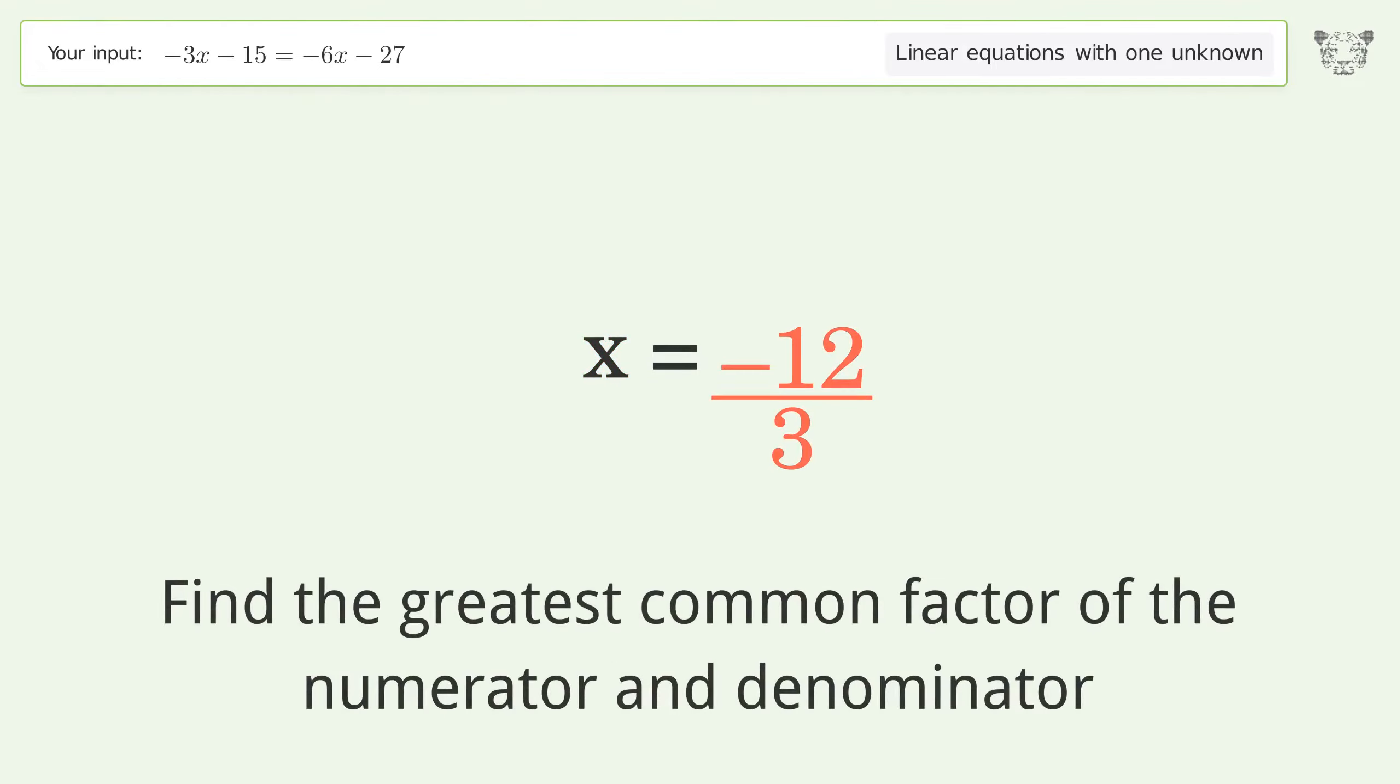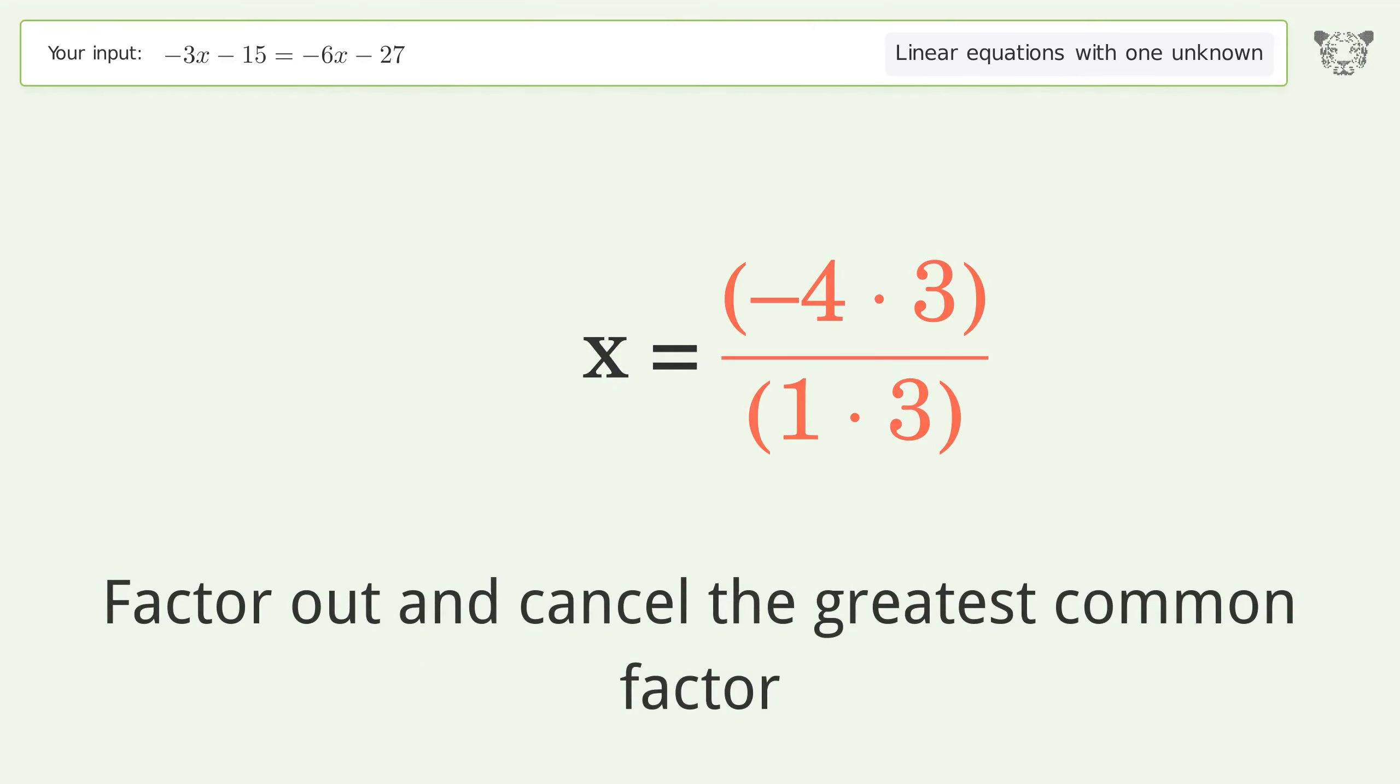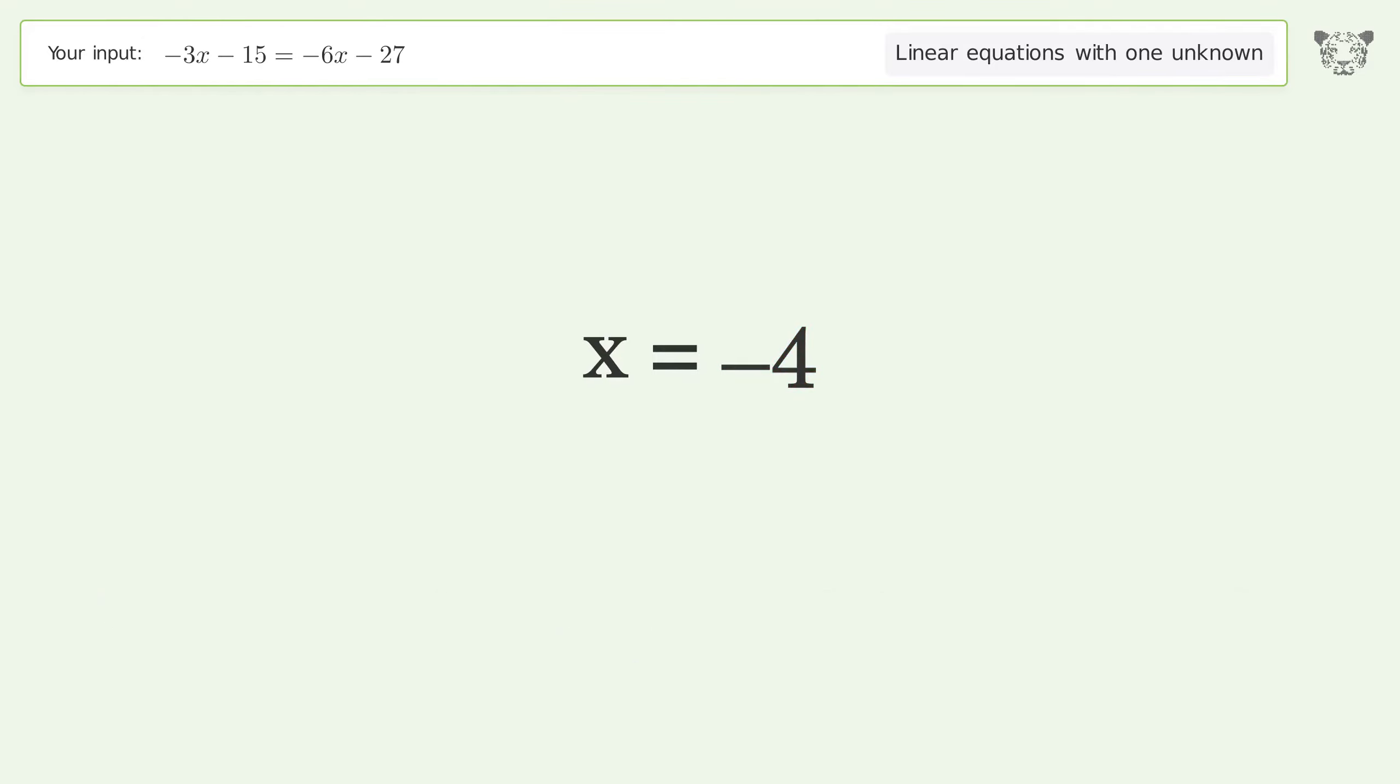Find the greatest common factor of the numerator and denominator. Factor out and cancel the greatest common factor. And so the final result is x equals negative 4.